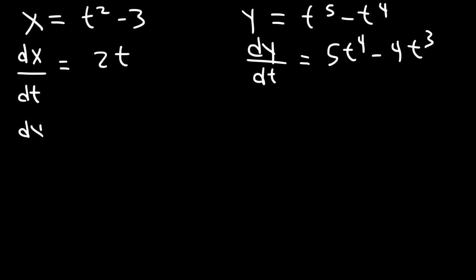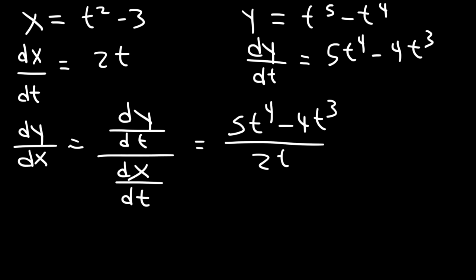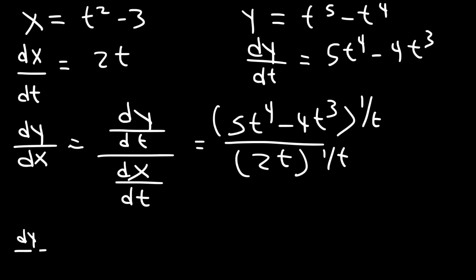So now we need to find dy/dx. You can do this by simply dividing dy/dt by dx/dt. And so that's going to be 5t to the fourth minus 4t cubed divided by 2t. We can divide everything by t, so dy/dx is equal to 5t to the third power minus 4t squared, all divided by 2.